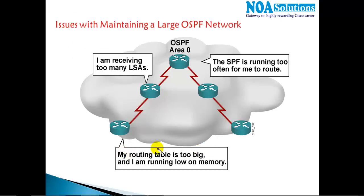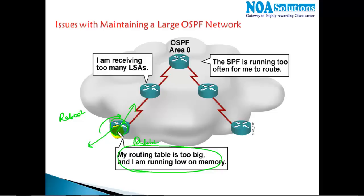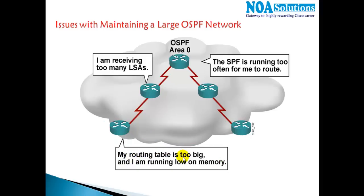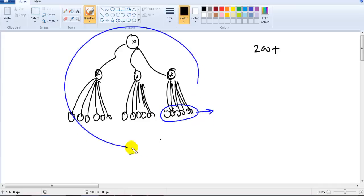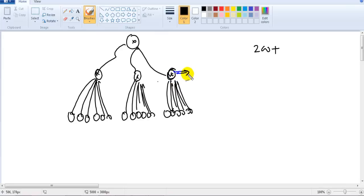These routers say: my routing table and database table is too big and I'm running out of memory — I don't have enough resources to process them. If a router doesn't have enough resources, it can reboot or go down, and communication will fail. The major problem is that the database table is too large for these routers to maintain, especially in big networks.